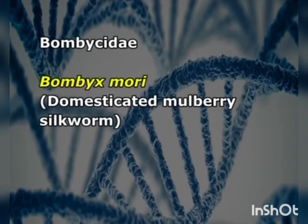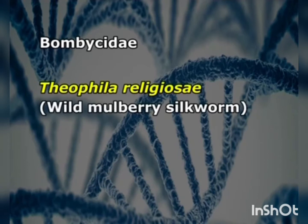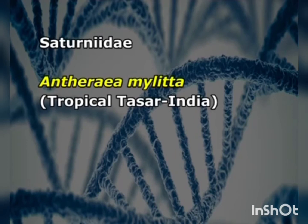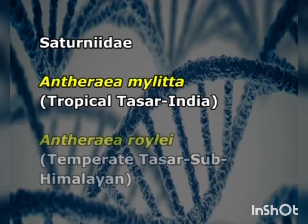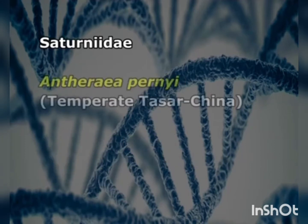Bombyx mori, the mulberry domesticated silkworm, comes under the family Bombycidae. Bombyx mandarina, the wild mulberry silkworm, also comes under Bombycidae. Theophila religiosa is also a wild mulberry silkworm found in the Himalayan region and comes under Bombycidae. Under Saturniidae, Antheraea mylitta, also called the tropical tasar silkworm, Antheraea roylei, the temperate tasar silkworm, and Antheraea pernyi, the temperate tasar silkworm of China, are included.